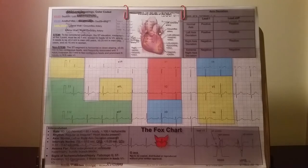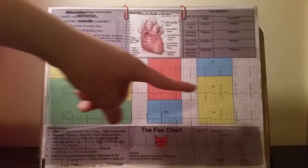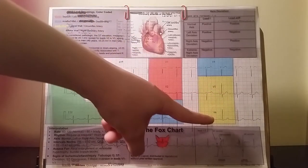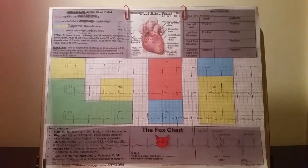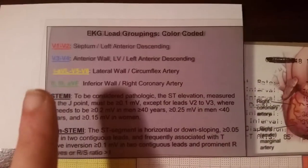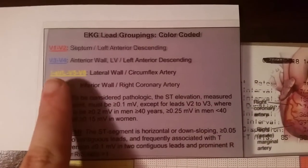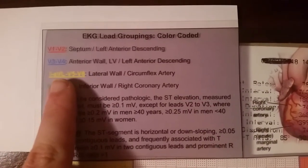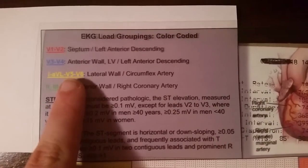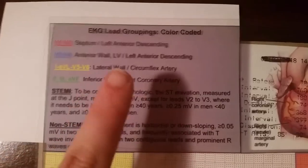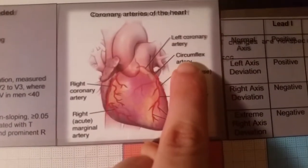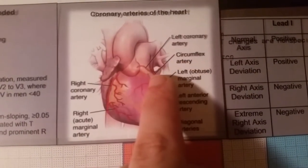If we look, we can see leads 1, AVL, V5, and V6 are a group. Using the color-coded key in the upper left-hand corner, we see that leads 1, AVL, V5, and V6 involve the lateral wall of the heart, which is led by the circumflex artery.